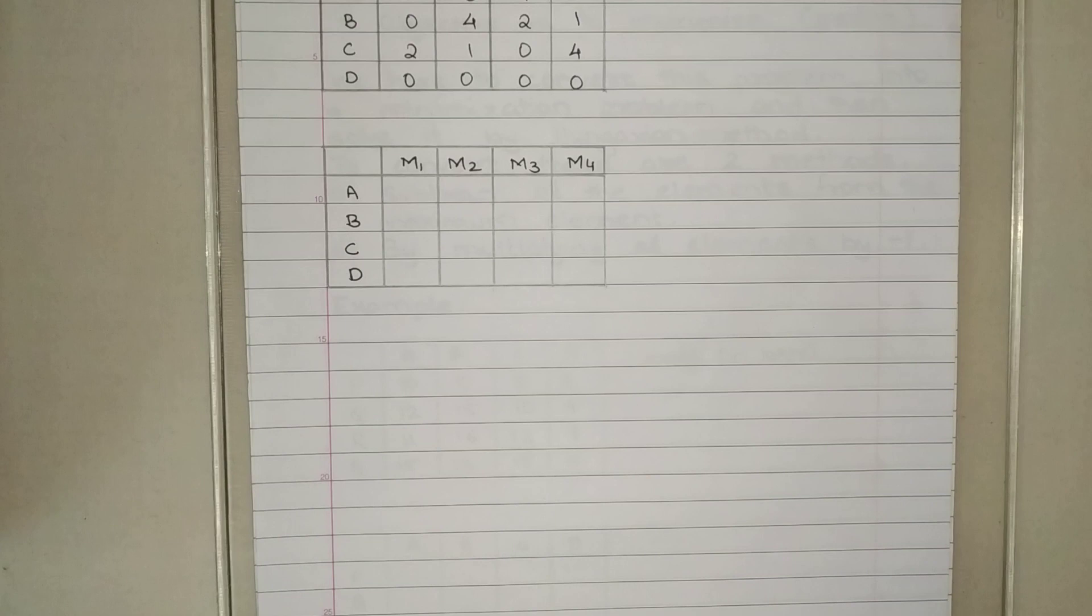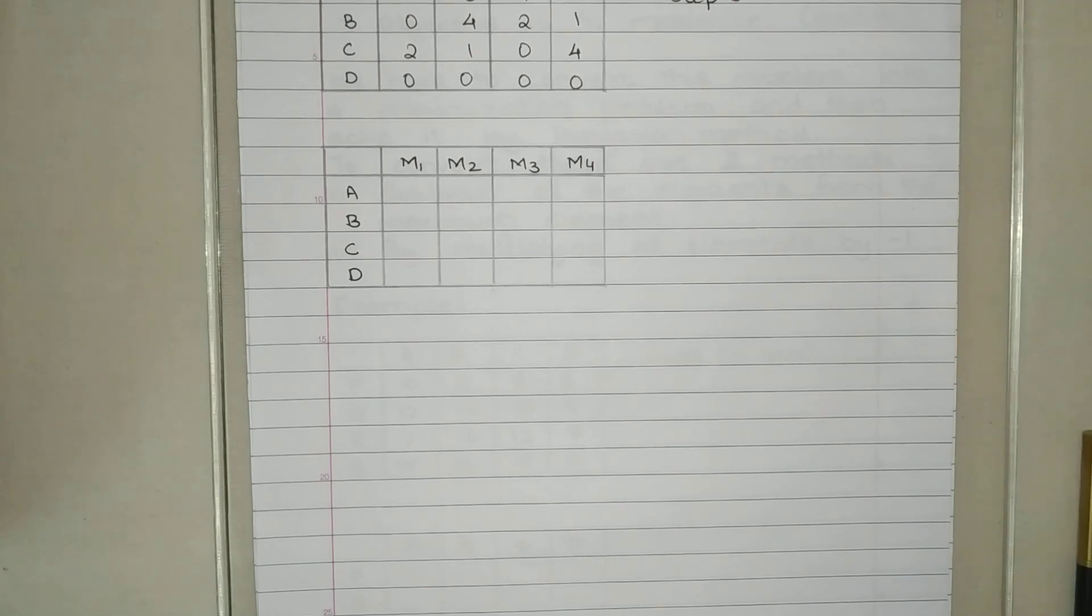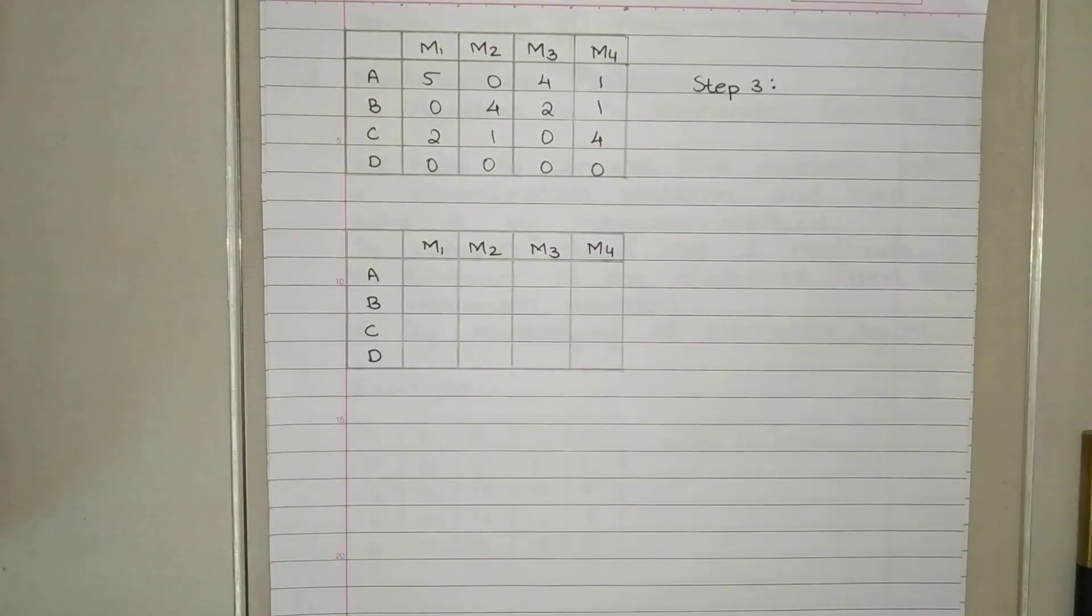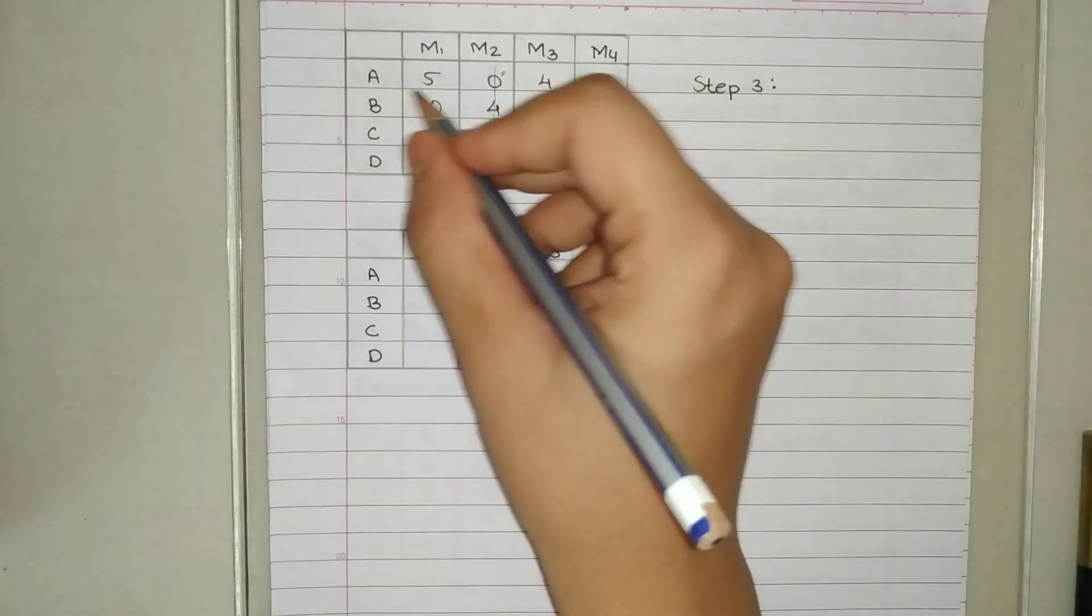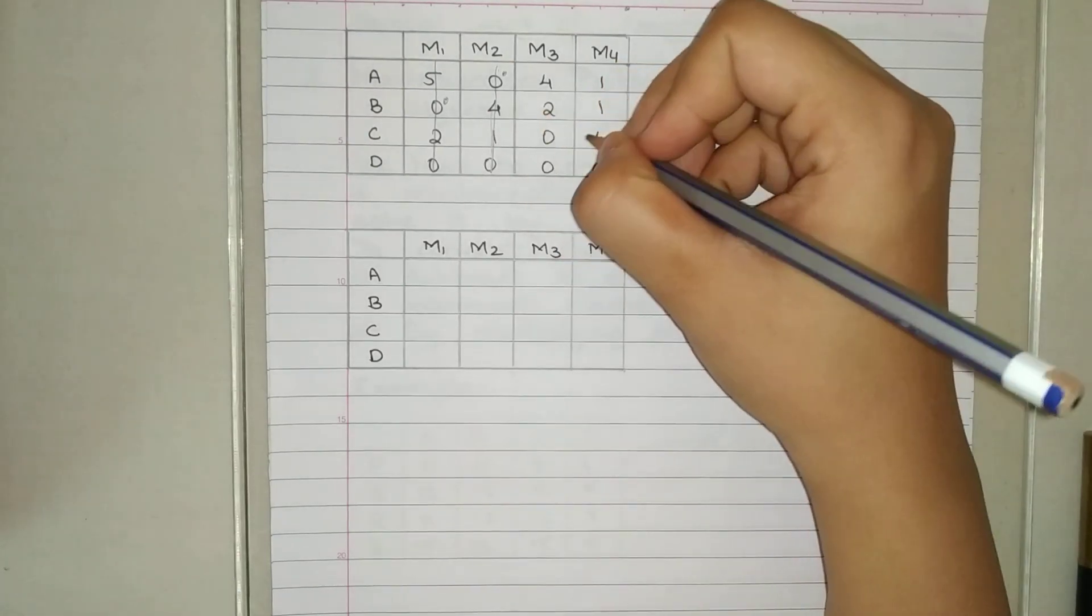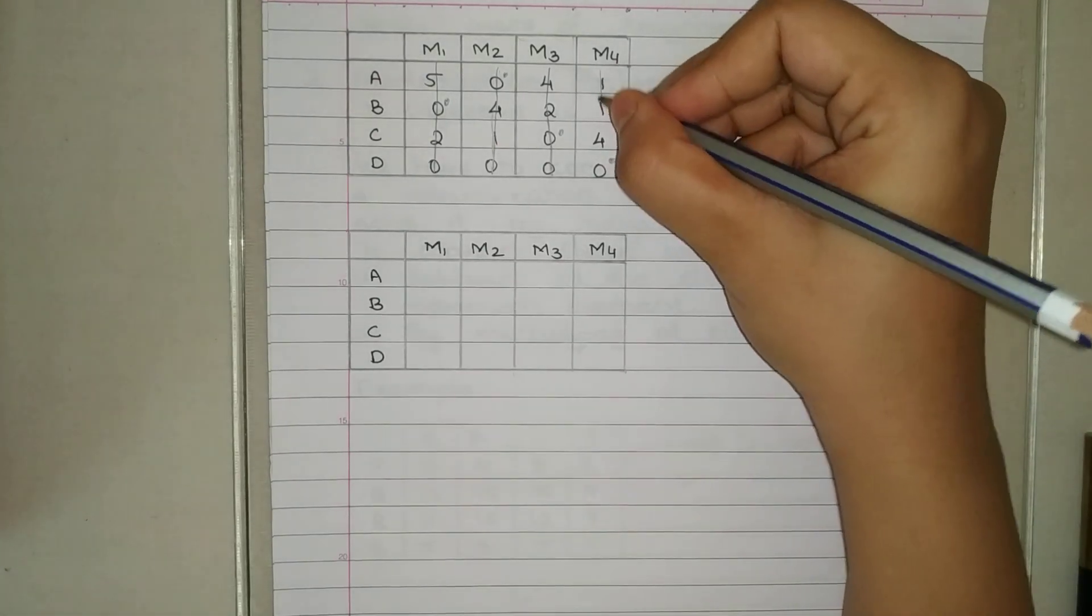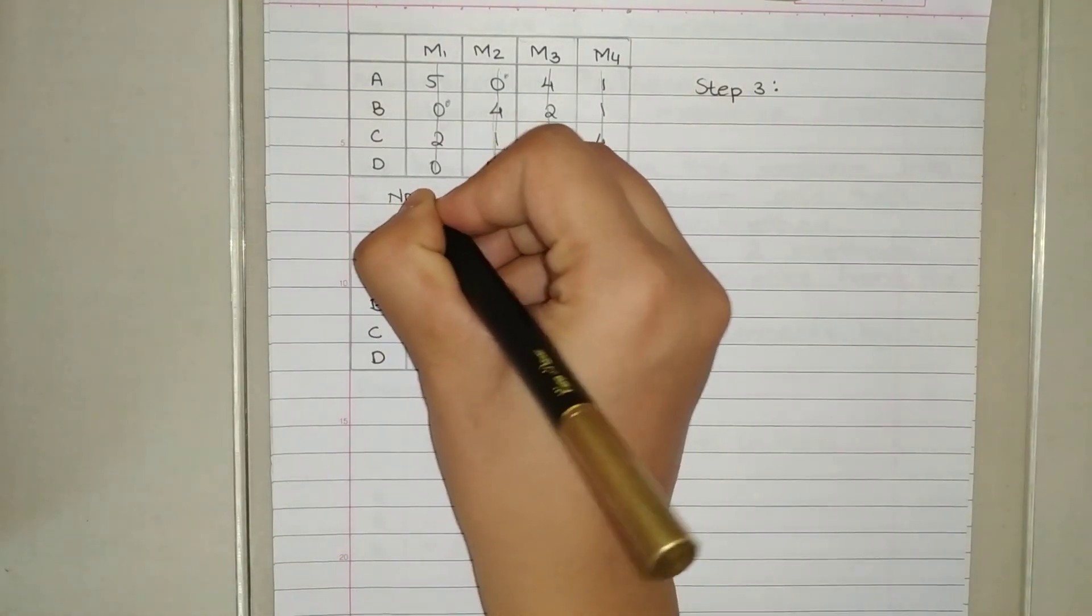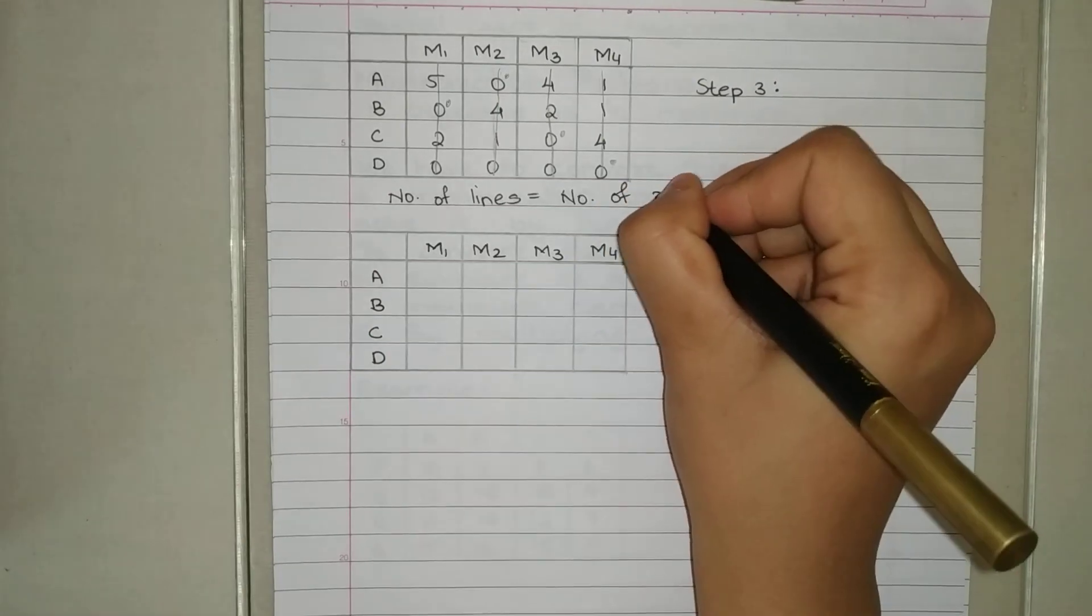Now we have to do step three after this, that is making lines. In the first row, can you see there is one single zero? Make a dot and cut the column. Next, can you see one single zero? Make a dot and cut the line. Then next in the third row, there is again a single zero. Make a dot and cut the line. And in the last row there is one single zero. So number of lines is equal to number of rows.